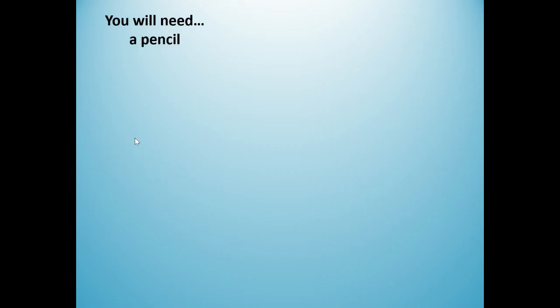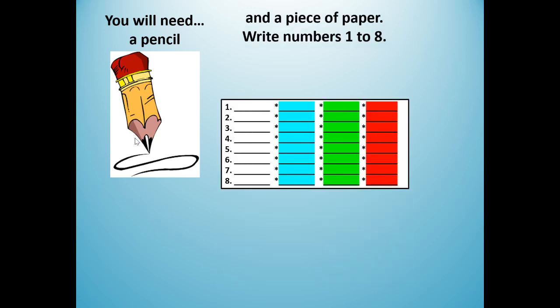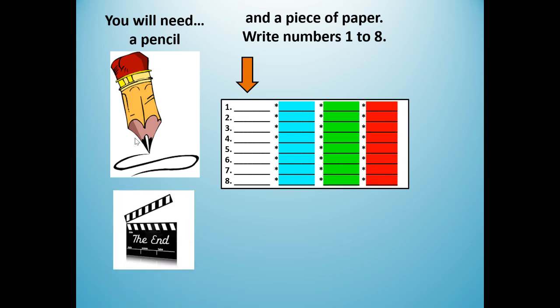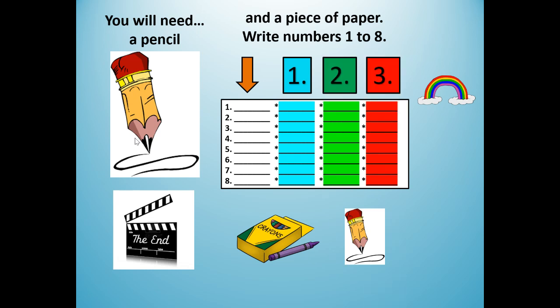For this lesson, you will need a pencil and a piece of paper, and you're going to write your numbers one to eight, because for every vocabulary word you're going to write it down. At the end of our lesson, I'm going to challenge you to rainbow write or write your words one, two, or three extra times. For each word one through eight, you're going to write the vocabulary word, and at the end I will challenge you to write each vocabulary word three more times.